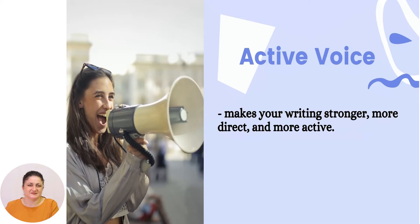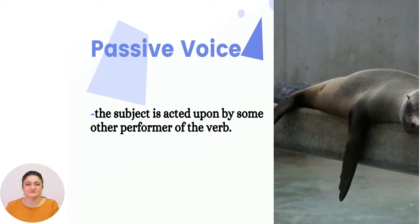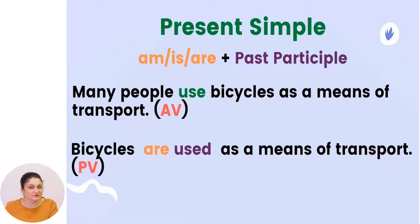Of course you will understand because I am going to help you. Active voice makes your writing stronger, more direct, and more active of course. Passive voice is when the subject is acted upon by some other performer of the verb. To make it simpler: active voice means that the subject of the sentence does the action, but passive voice is vice versa — the object of active voice suffers the action.